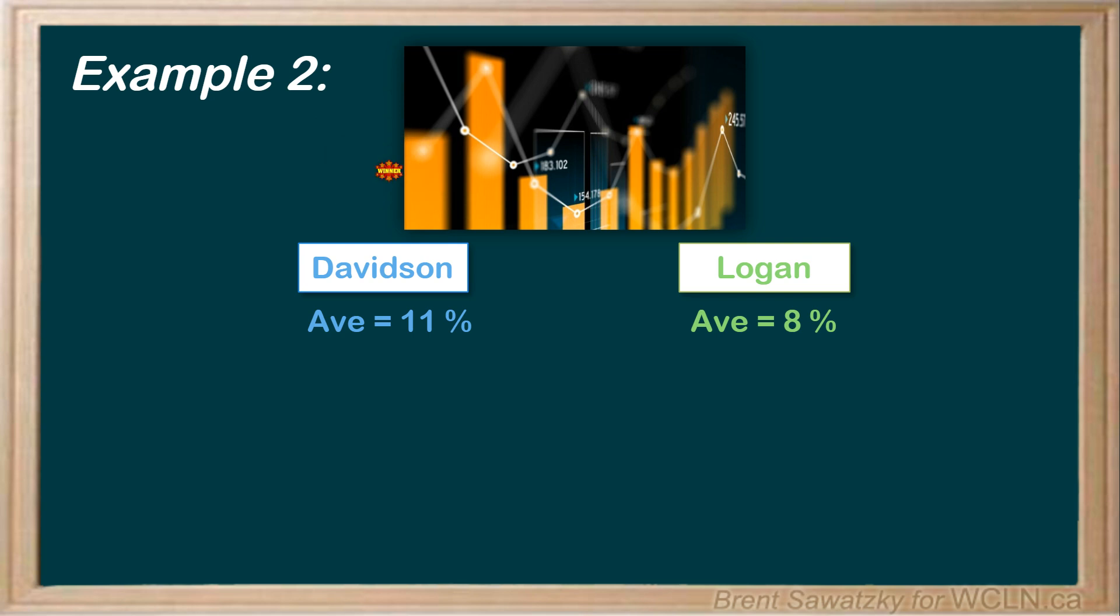Let's dig a little deeper. Let's consider the standard deviations. We'll note that we used a sample of the entire data, that is, 20 investors from each group, and therefore we'll use s for a standard deviation symbol. So we note that the standard deviation for the Davidson investment strategy was 6.4%, while the standard deviation for the Logan strategy was 2.2%.